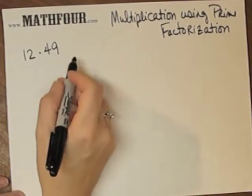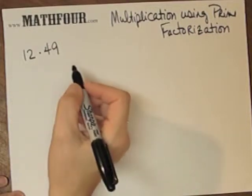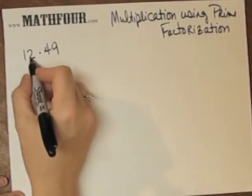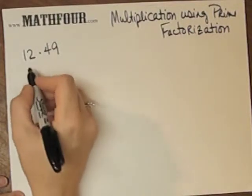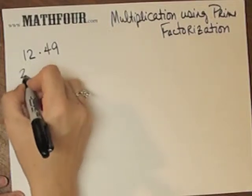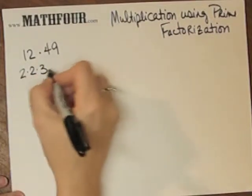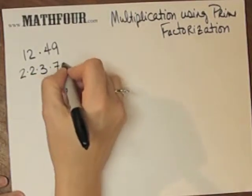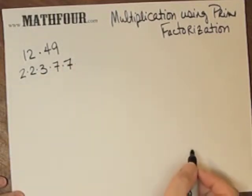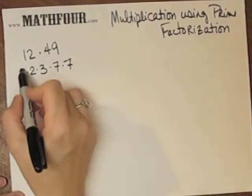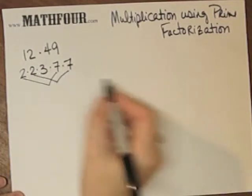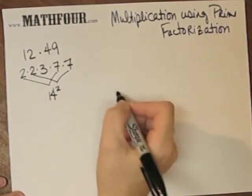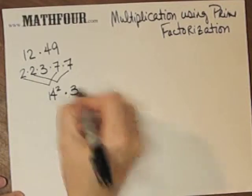I can notice that 12 is 4 times 3, or 2 times 2 times 3, and 49 is a square: 7 times 7. If I notice here, I've got two pairs of 2's and 7's. So this is 14 squared times 3.